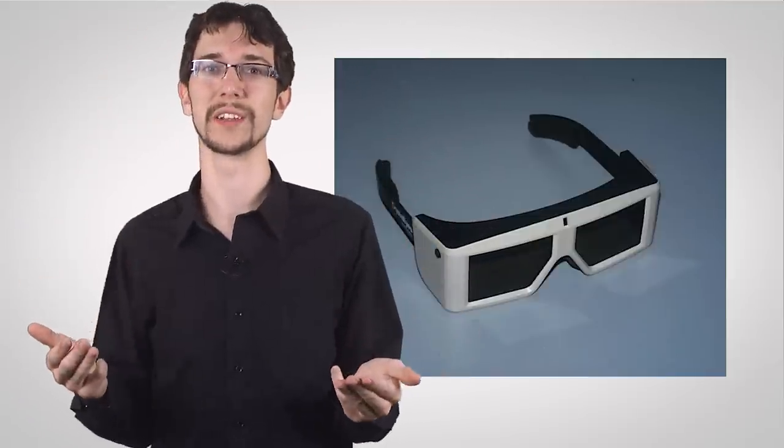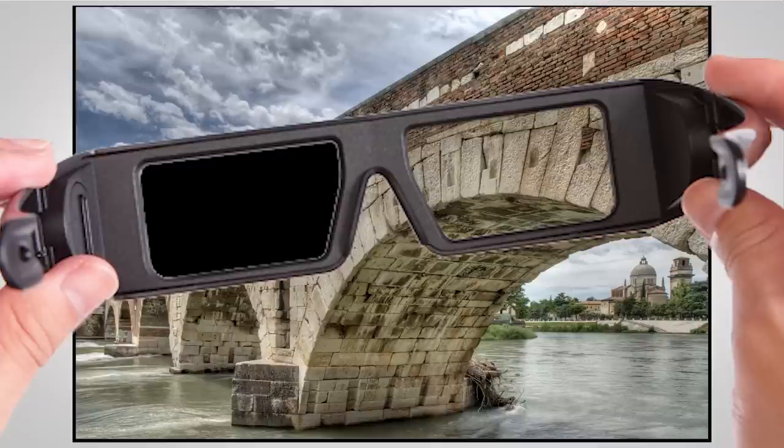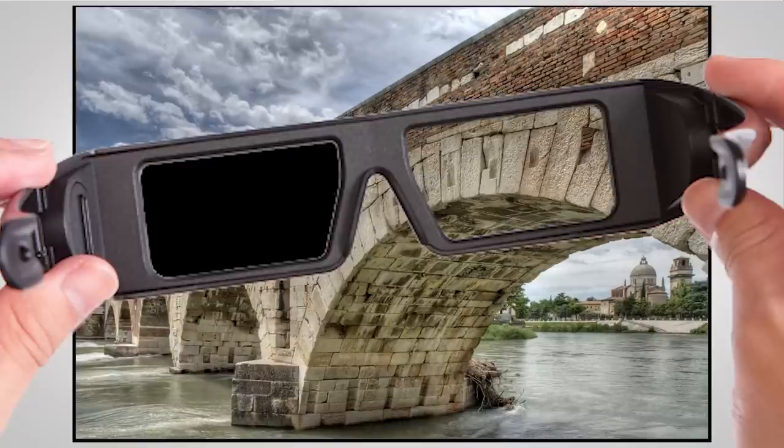You wear these active shutter glasses, which block light to each of your eyes alternately, in sync with the screen. So when the screen displays an image intended for your right eye, the glasses block the left eye from seeing anything, and vice versa.